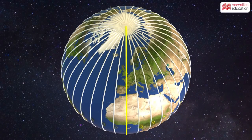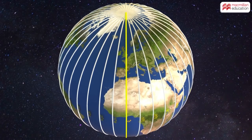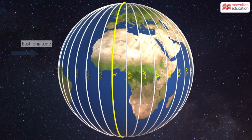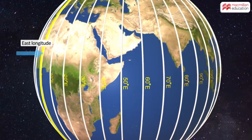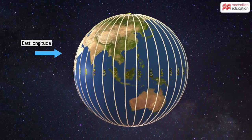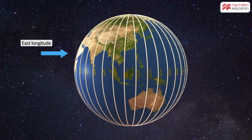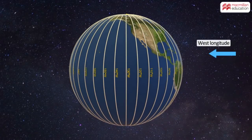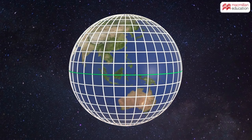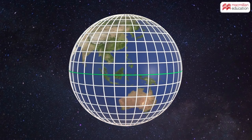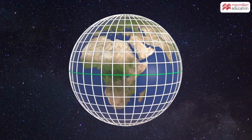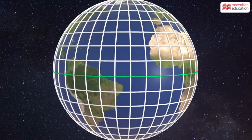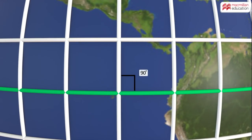One half of the world is measured in 180 degrees of east longitude, while the other half in 180 degrees of west longitude. Both the latitudes and longitudes form a grid in which they intersect each other at right angles.